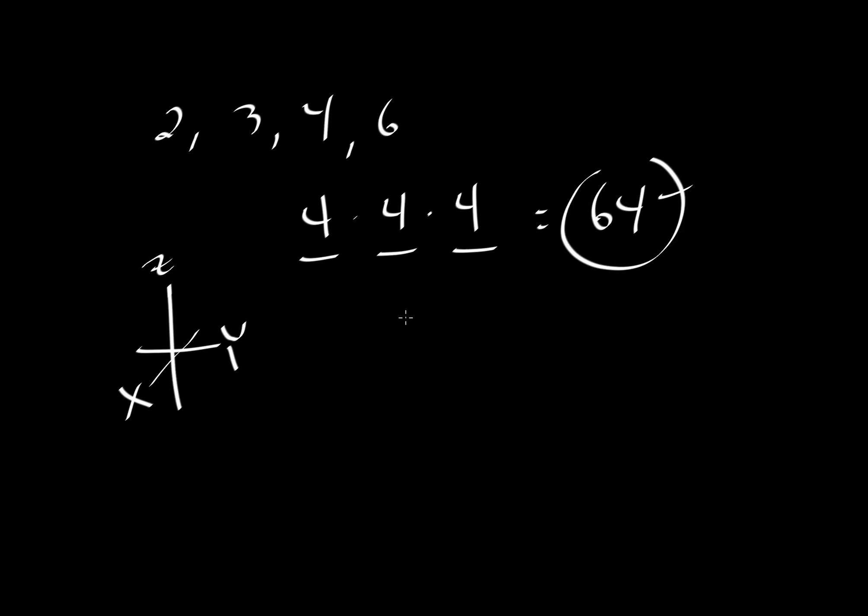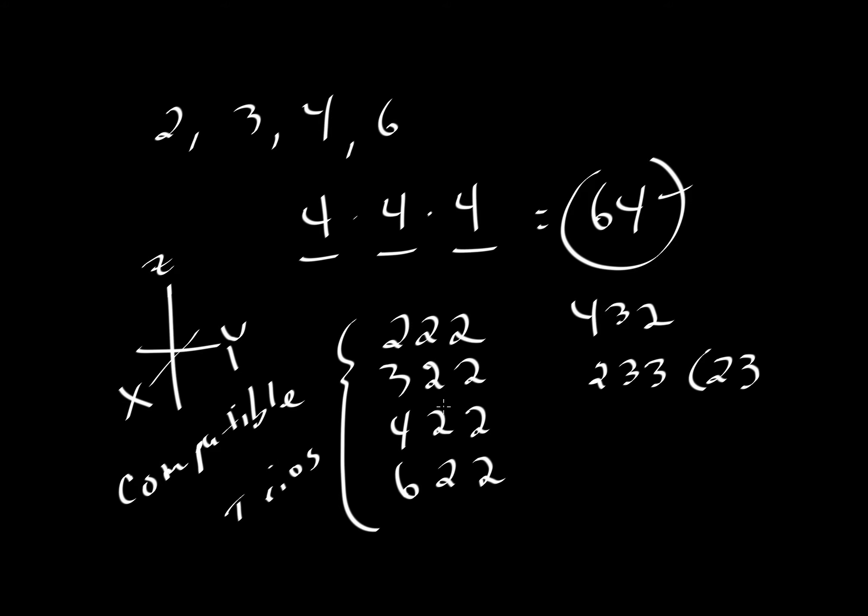There are actually only six. The possible trios that satisfy Euler's theorem and are not repeats are: 2-2-2, 3-2-2, 4-2-2, 6-2-2, 4-3-2, and 2-3-3, which is usually abbreviated as 2-3. These are the six possible compatible trios. Notice that is a very small subset of the mathematical possibility of taking four things three at a time. We have a greatly reduced subset in terms of what is possible.